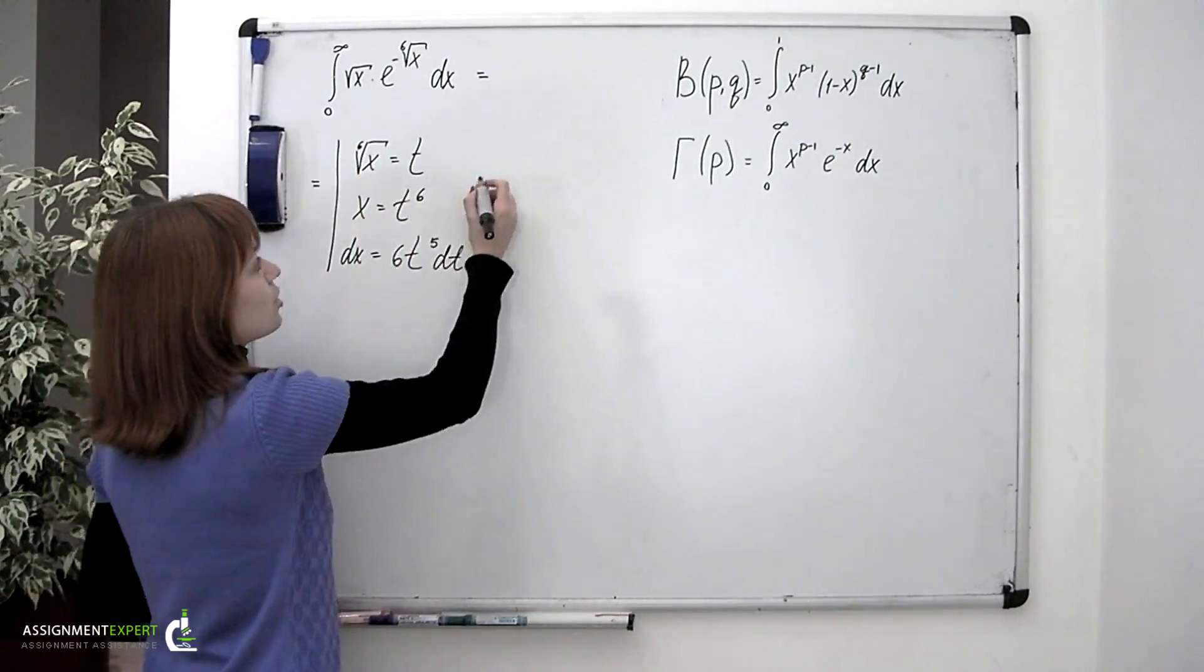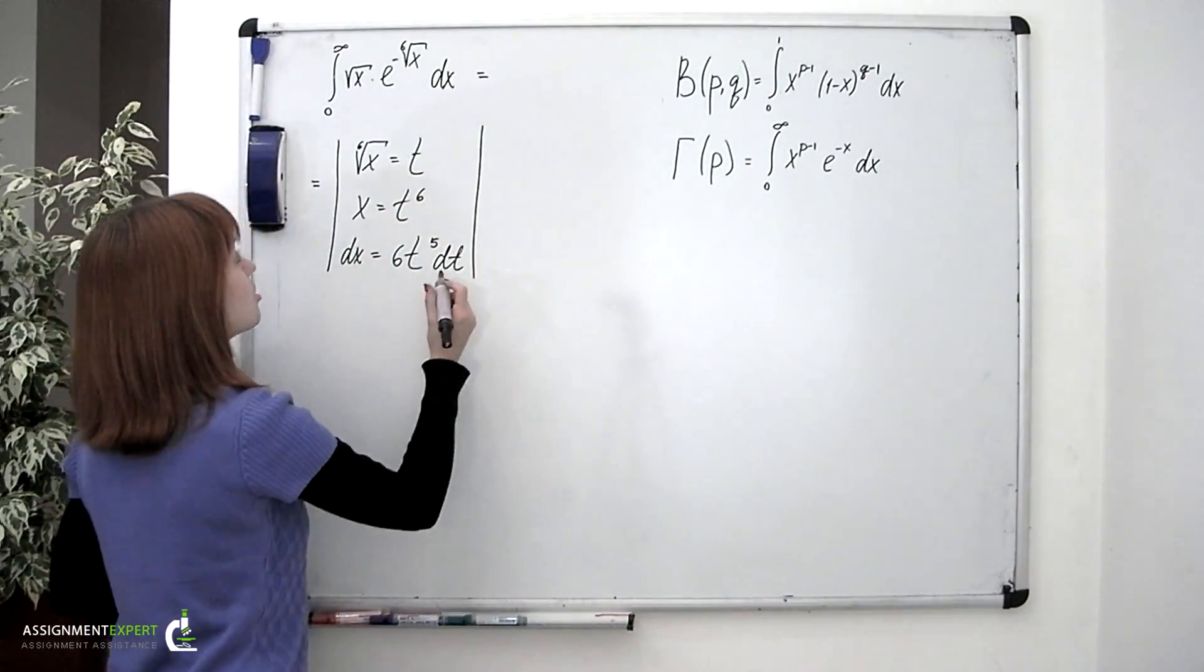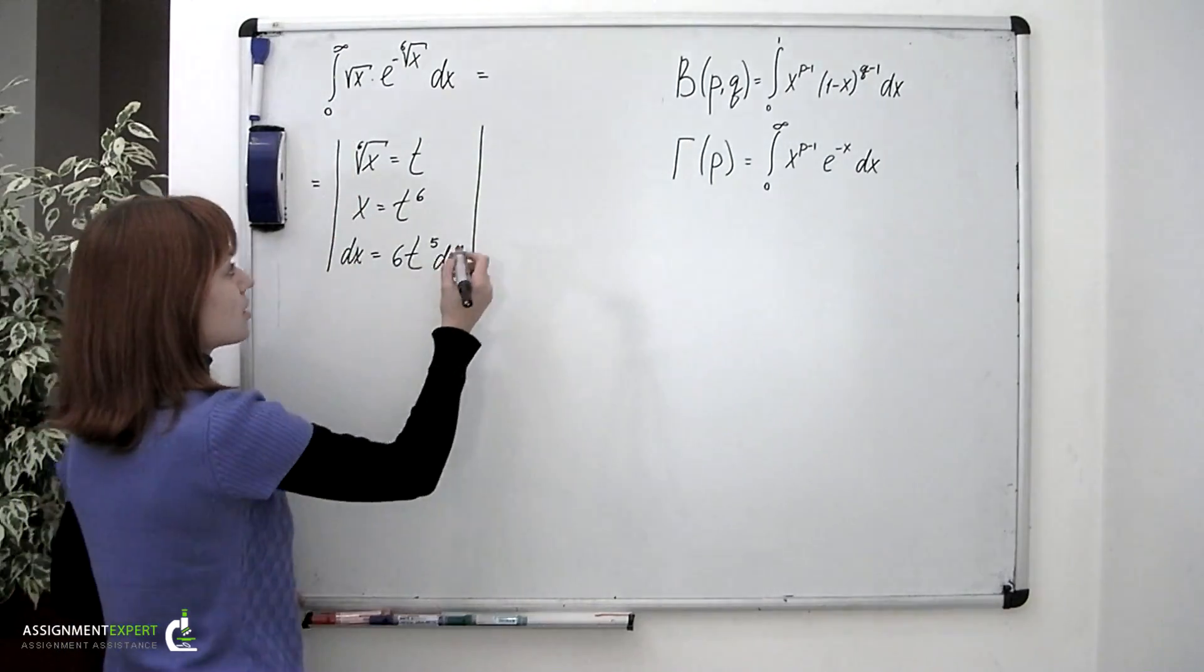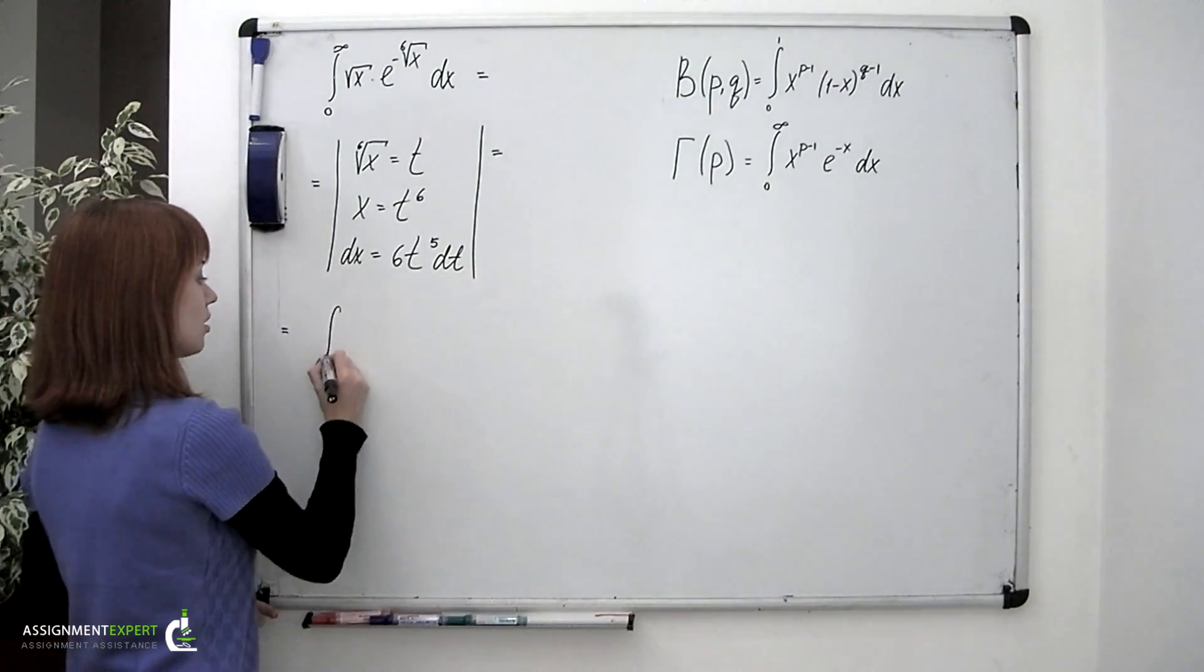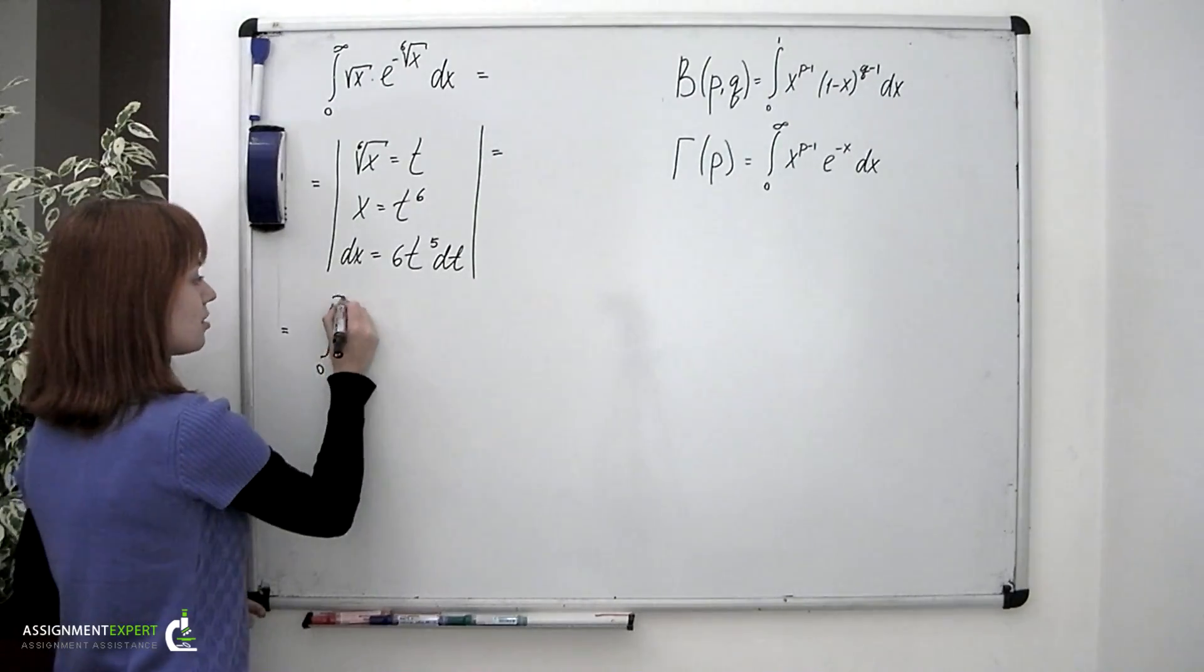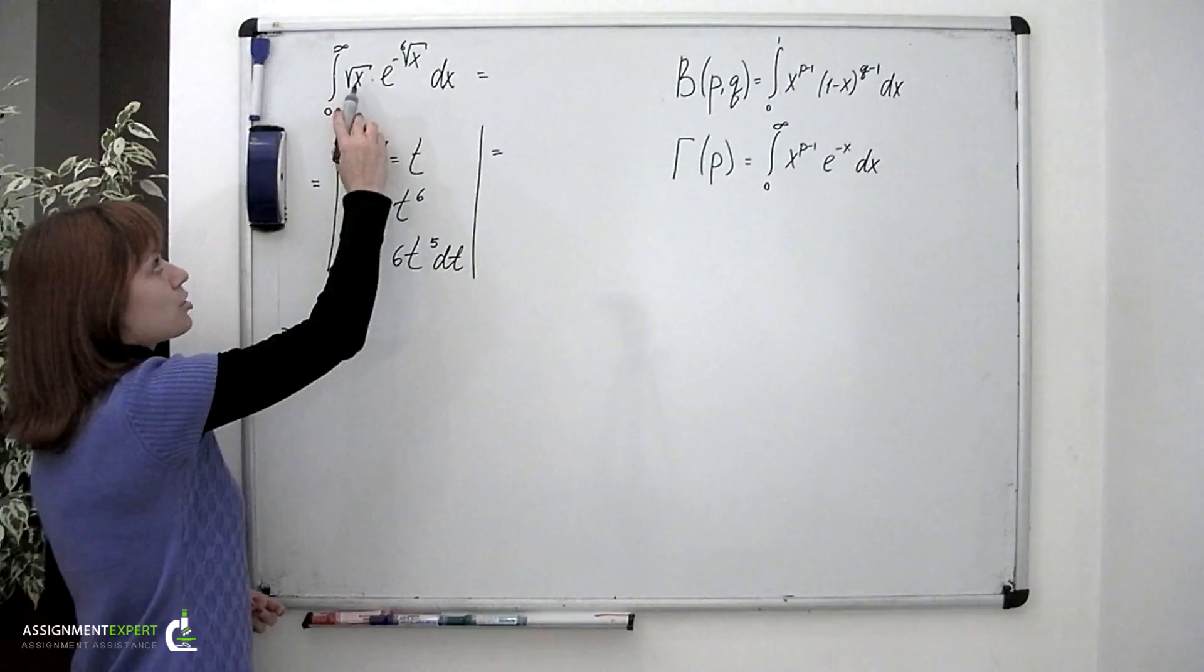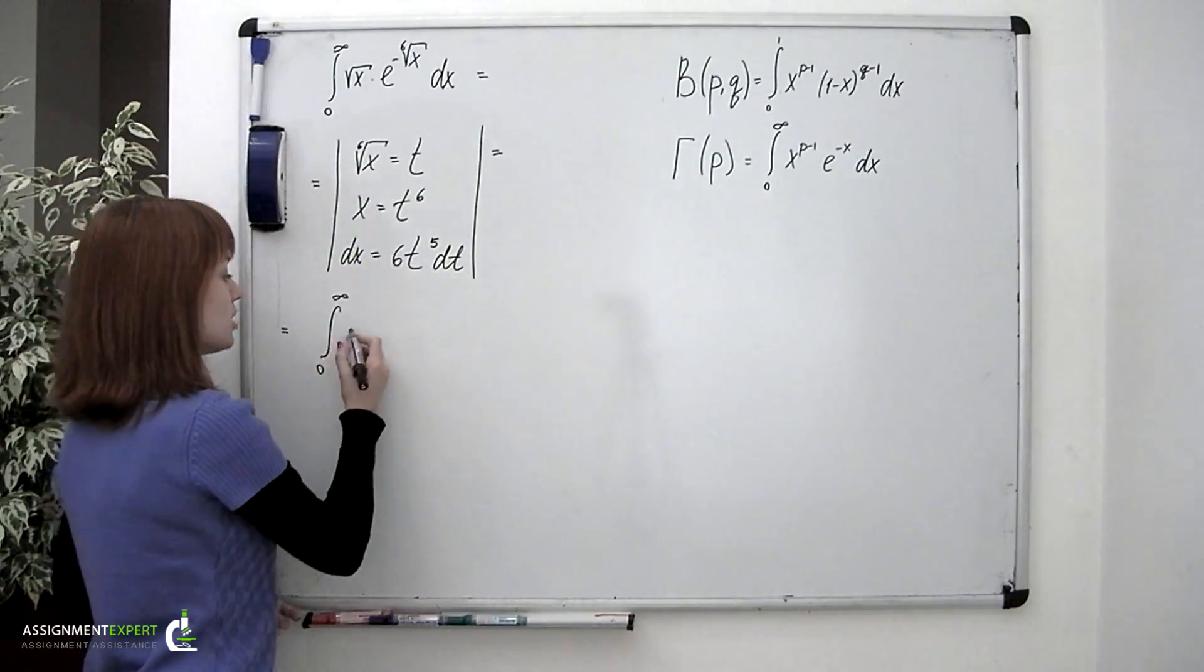The limits of integration remain the same, so we're also going to have 0 and infinity. And so we'll take the following integral. Integral from 0 to infinity, square root of x transforms into t cubed.